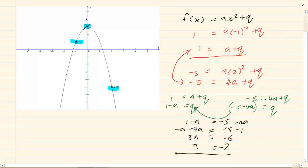Now once we have a we can go back and solve for q. We know q is equal to 1 minus a. So we've got q is equal to 1 minus a. So it means q is equal to 1 minus minus 2, so give me 3. Q is equal to 3.